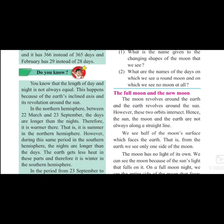In the northern hemisphere, between 22nd March and 23rd September, the days are longer and nights are shorter. It is warmer there, that's why you can see a summer season. We have already faced our summer season and right now the rainy season is going on — that is the summer in the northern hemisphere.